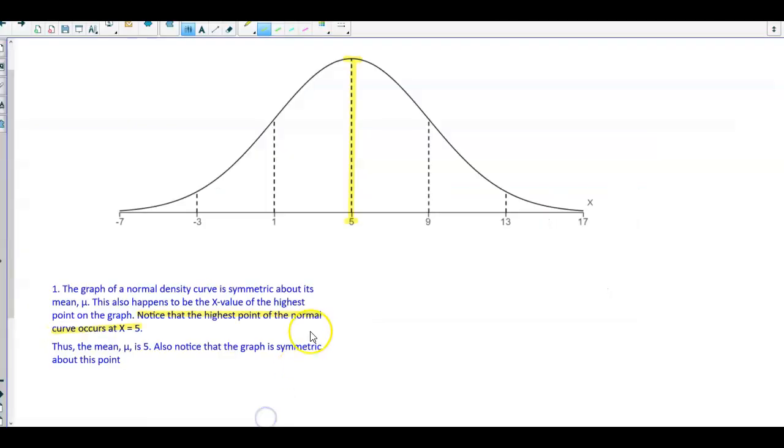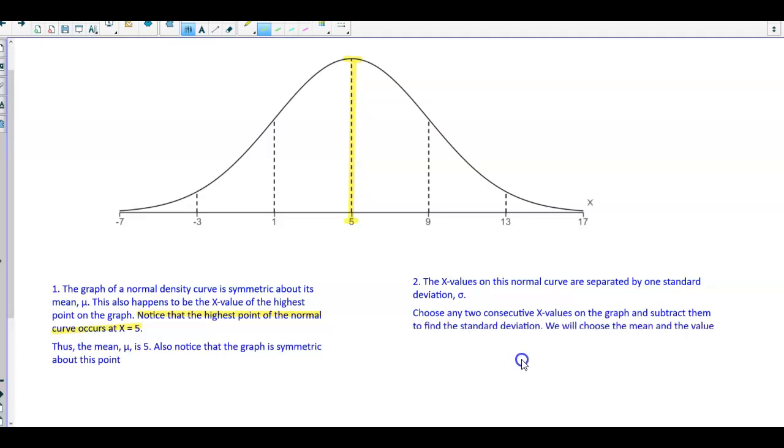Now the next thing we want to do is find the standard deviation. The x-values on this normal curve are separated by one standard deviation. We're going to choose any two consecutive x-values on the graph and subtract them to find the standard deviation.